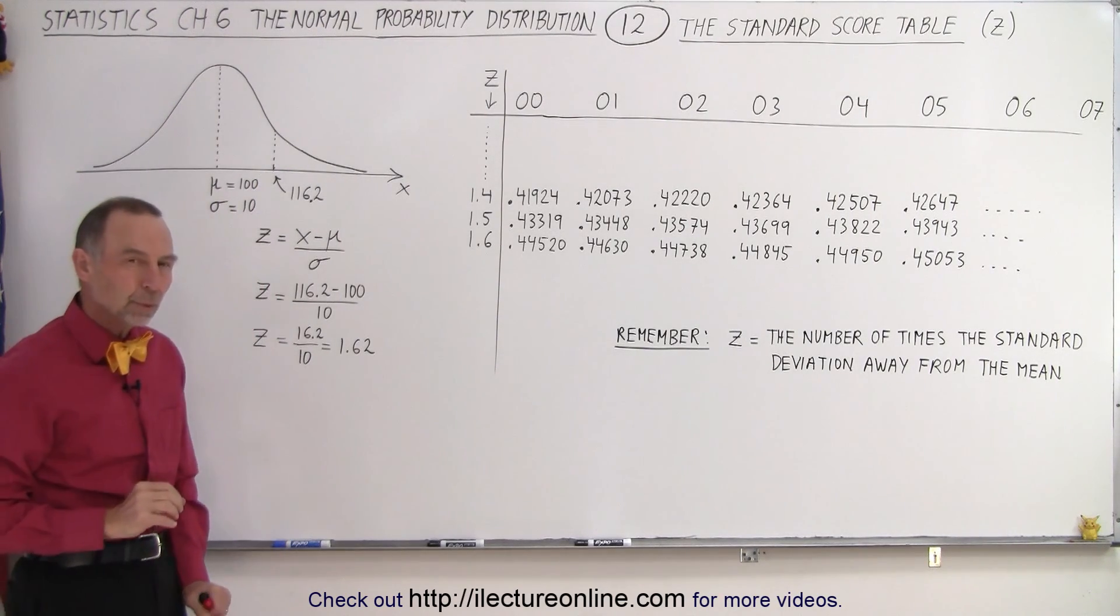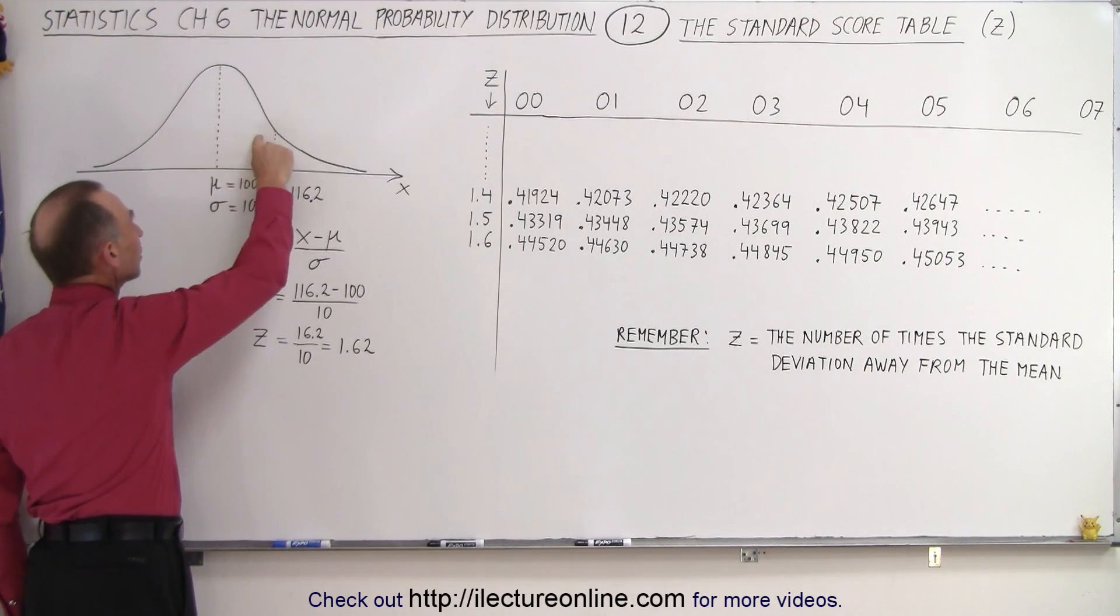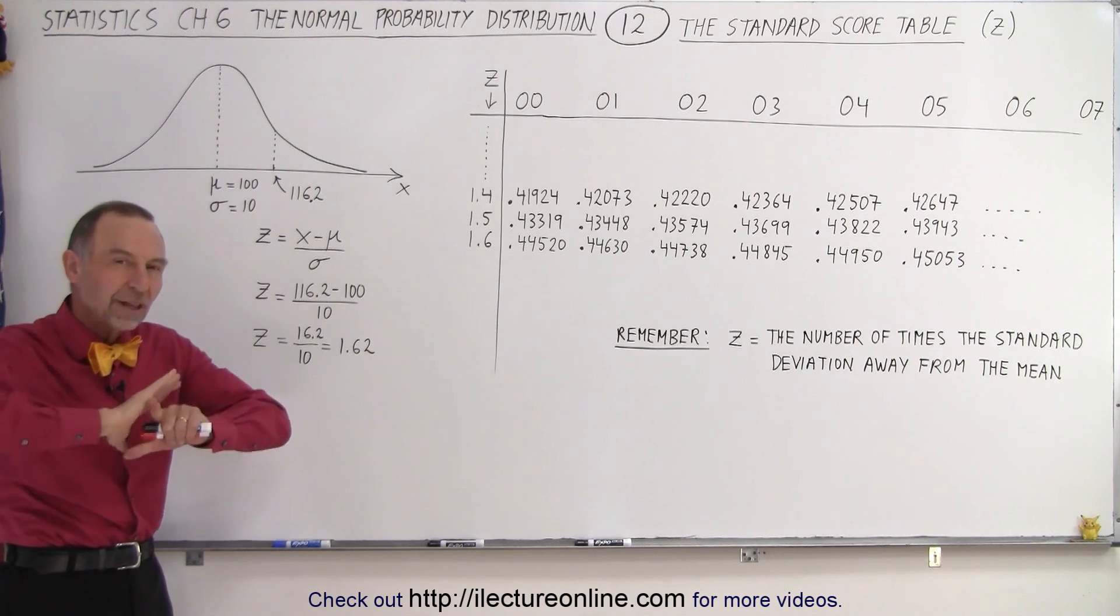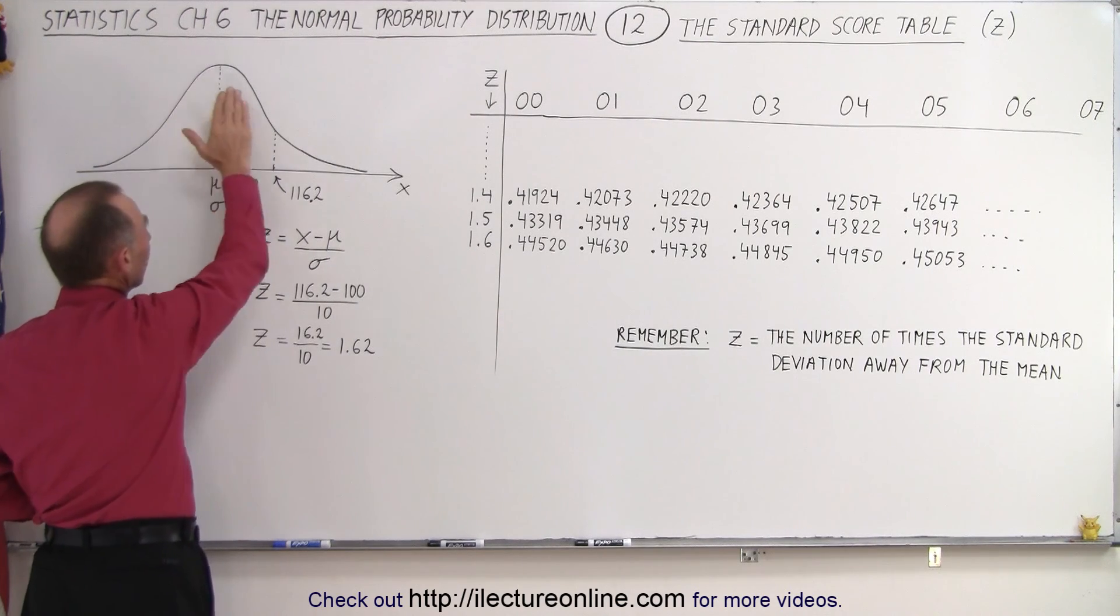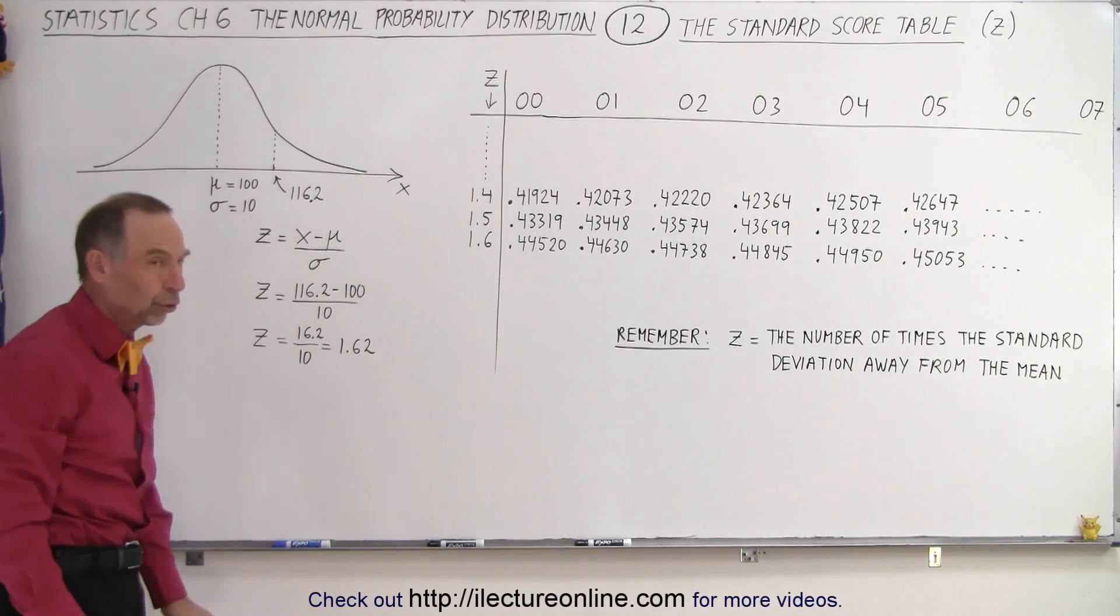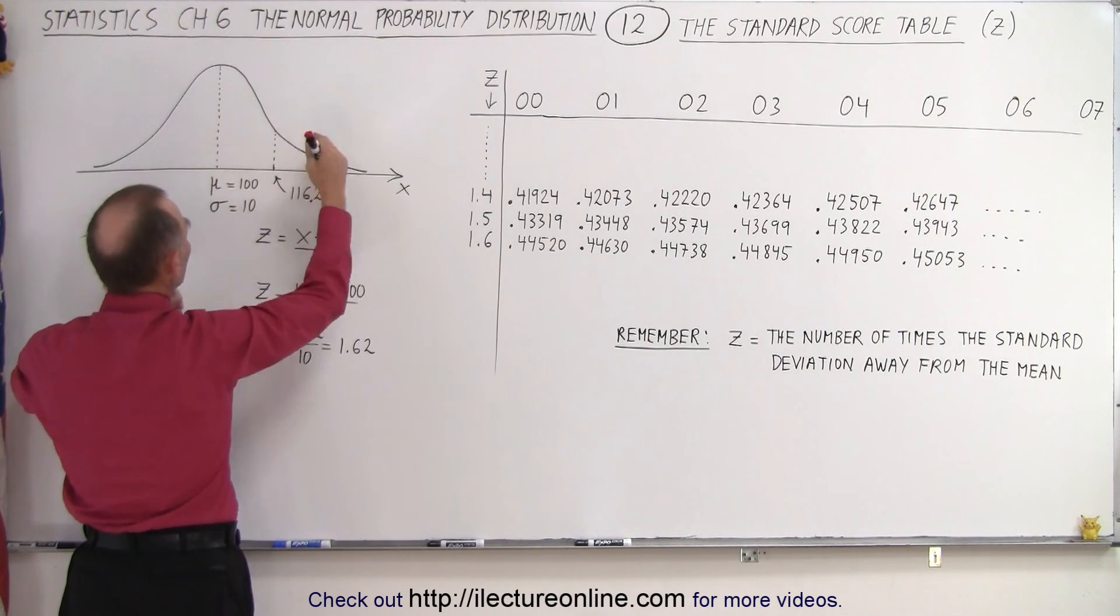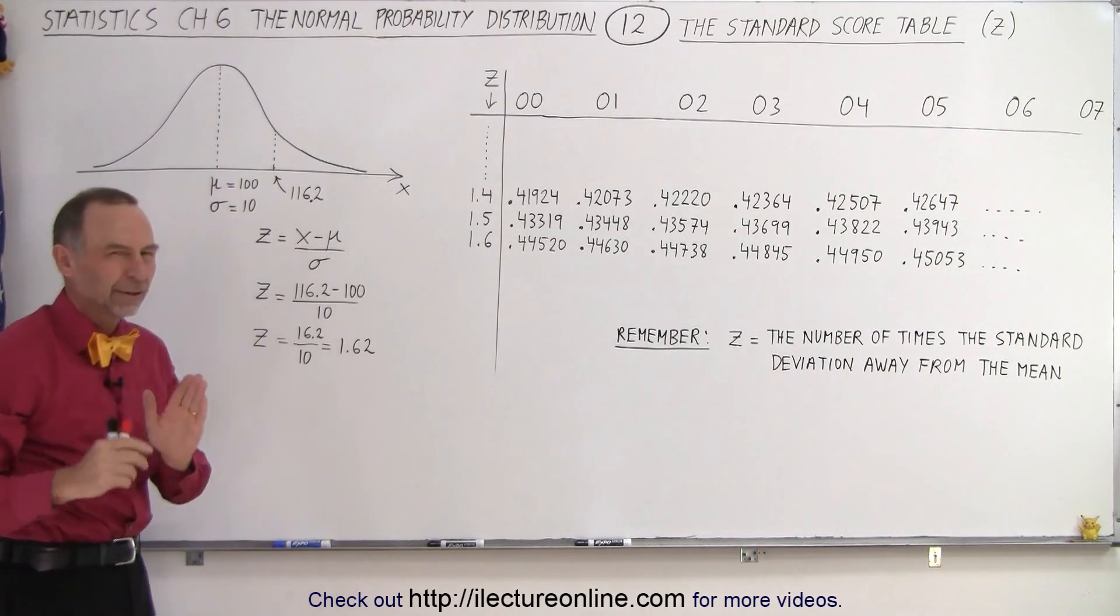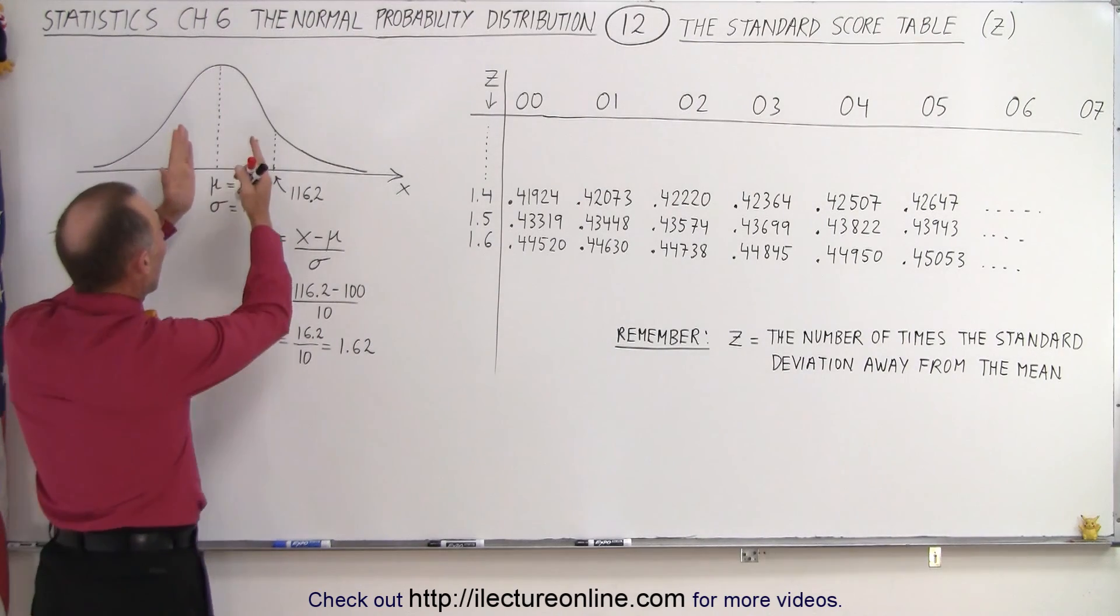Now what about the table? Why do we need a table and what does that signify? Well it turns out that we want to know the area underneath the curve from the mean to that particular point. And we want to know how much that represents compared to the whole area. Now the whole area would be equal to 1, which is 100%. All values are accounted for underneath this normal distribution. There's not a single value that will not fall underneath this curve. So what percentage of all the values randomly picked from this distribution will fall between the mean and 1.62 times the standard deviation above the mean? So how do we find that?